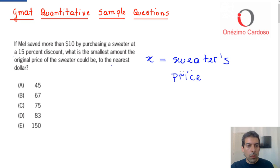I also know that Mel received a 15% discount, so the discount that Mel received is 15% of X. Since the question said that Mel saved more than $10, I know that 15% of X must be greater than 10, so we got an inequality here.